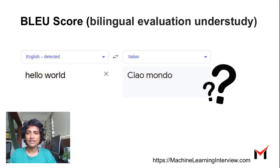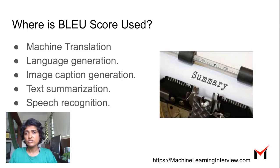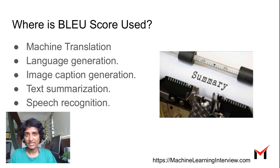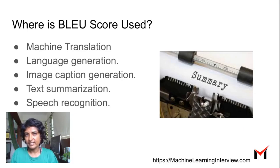For instance, you translated 'hello world' into something and you have a reference which is what it's supposed to be. How do you compare if the candidate you generated is close to the reference? It can be used in applications such as machine translation, text summarization, speech recognition, or image caption generation — anywhere where you generate some text and have reference text, and you want to see how close what you generated is to the reference.